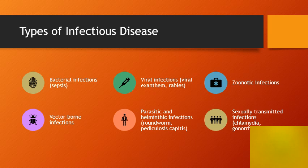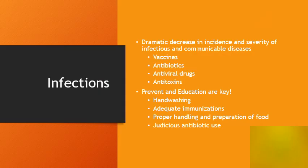Some types of infectious diseases we'll talk about are bacterial infections, which might include sepsis; viral infections, which include viral exanthems and rabies; zoonotic and vector-borne infections; parasitic and helminthic infections, which might include roundworms; head lice; and sexually transmitted infections including gonorrhea and chlamydia.